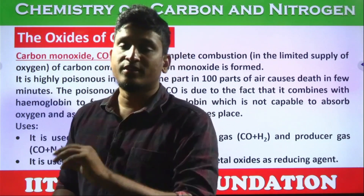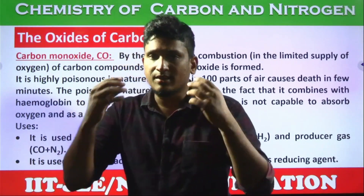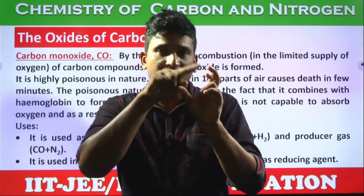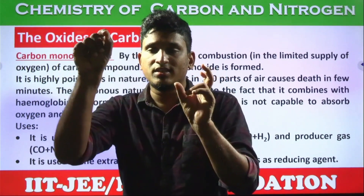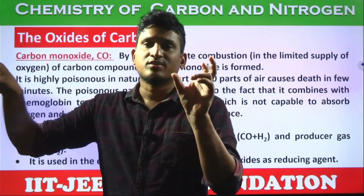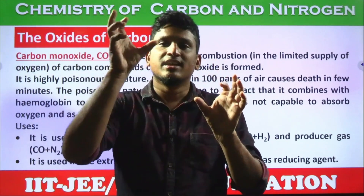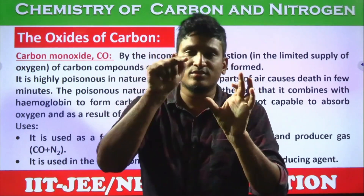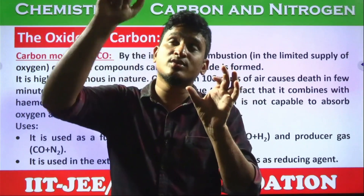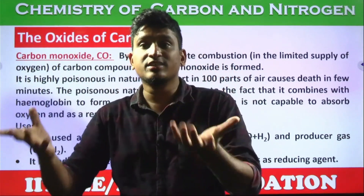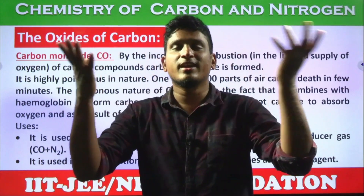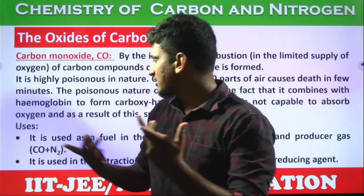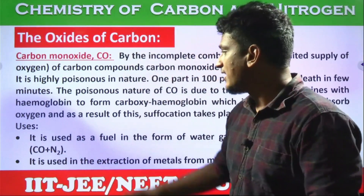The poisonous nature of carbon monoxide is due to the fact that it combines with hemoglobin to produce carboxyhemoglobin, which is not capable of absorbing oxygen. As a result, suffocation takes place. Carbon monoxide is also very harmful to the environment — it directly attacks the ozone layer: CO plus O3 produces CO2 plus O2, converting ozone into regular oxygen. This is one reason for depletion of the ozone layer.